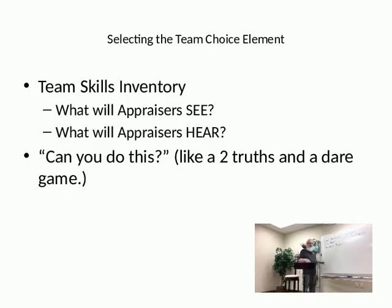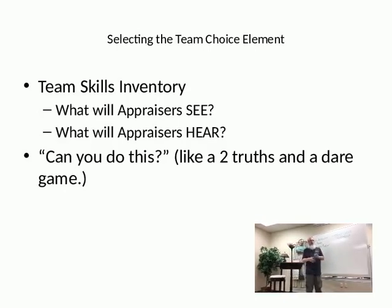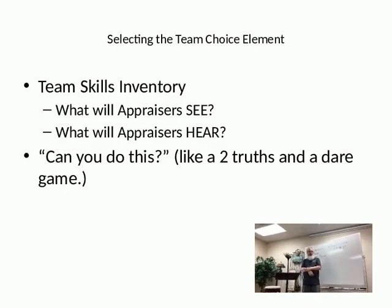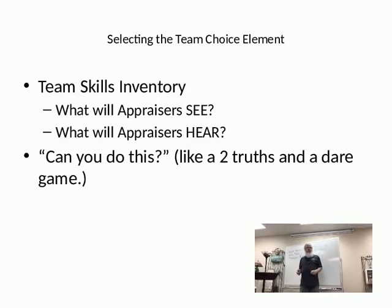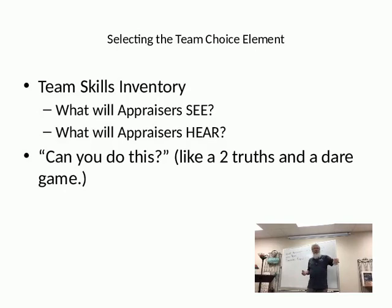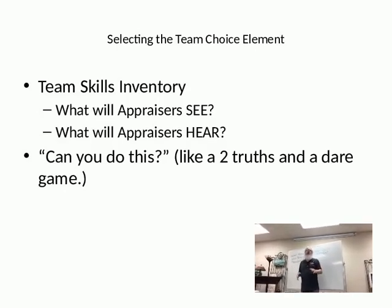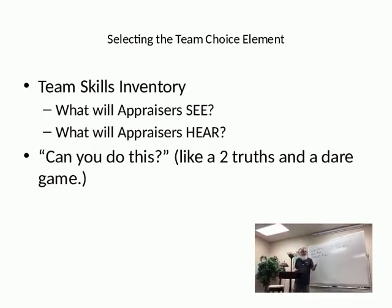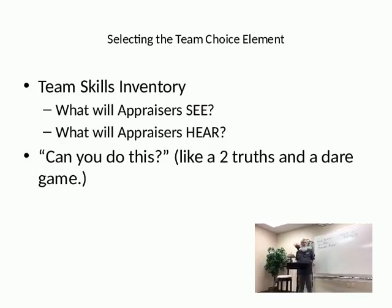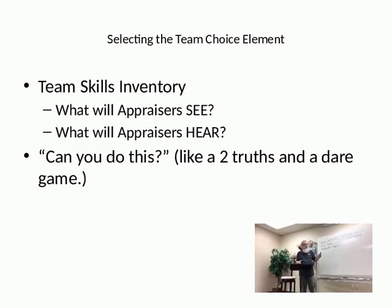Start out with a simple game of 'can you do this?' Each team member says, 'I can play the Star Spangled Banner on a rubber band.' Can you do this? 'No, but I can play it on a cigar box banjo.' And they go around — 'No, but I can run with scissors.' Not a good idea, but that would be one of the things they might list as a skill. You can discourage it later. But you find out what the appraisers are going to be able to see.